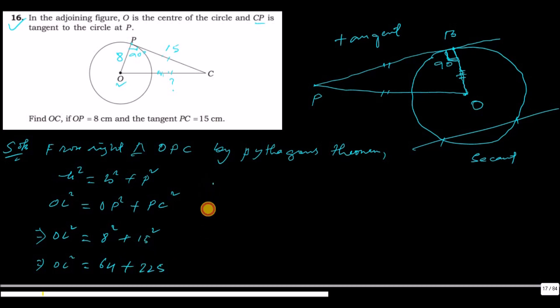So, OC square equals to 64 plus 225 equals 289. It implies that OC square equals to 289. 17 into 17 equals 289. 17 square means 17 into 17 equals 289.